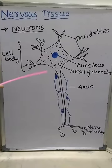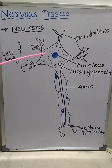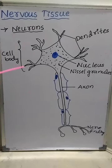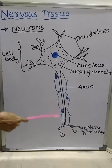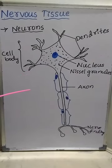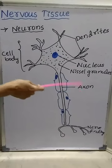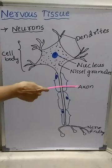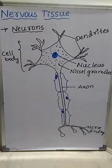Now let us look at the structure of the neuron. Draw a neat labelled diagram of a neuron — this is an important question. The neuron structure mainly contains three parts: cell body, dendrites, and axon.